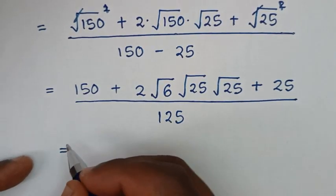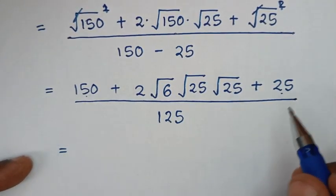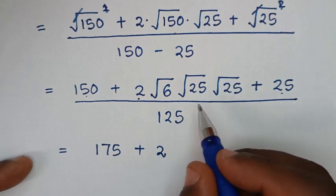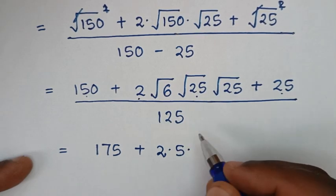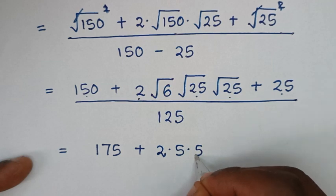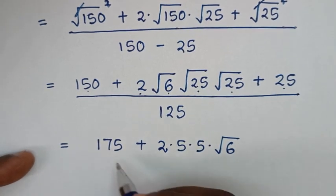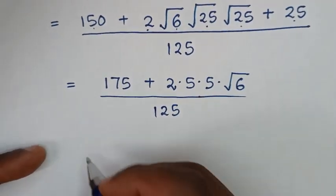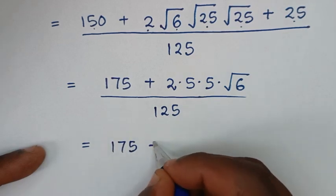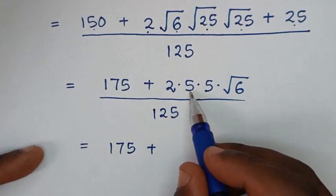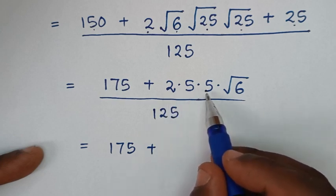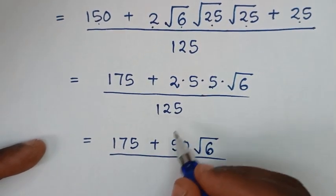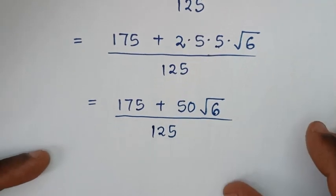Then it will be equal to: 150 plus 150 plus 25 is 175, then plus 2 times square root of 25 is 5, so 5 times 5 is 25, times square root of 6, then over 125. In the next step, we factorize 25 — we take 25 out of bracket. 175 divided by 25 is 7, plus 50 divided by 25 is 2 times square root of 6, bracket. Then over 125.